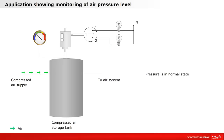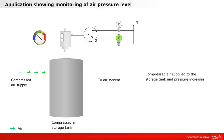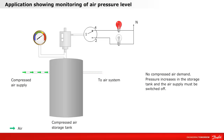Let's take a look at an application for monitoring the air pressure level. When compressed air is supplied to the storage tank, the pressure increases. Then compressed air supply and demand are equal. When there is no demand for compressed air, the pressure increases in the storage tank and the air supply must be switched off.